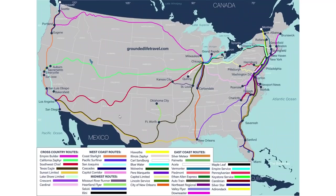A popular vacation idea on our YouTube channel: we started on the west coast, took the Coast Starlight all the way up to Seattle, then the Empire Builder from Seattle all the way to Chicago, then the California Zephyr back to Emeryville. Three trains — Coast Starlight, Empire Builder, California Zephyr — and we saw almost the entire country, covering the Midwest, the Great Plains, and the West.